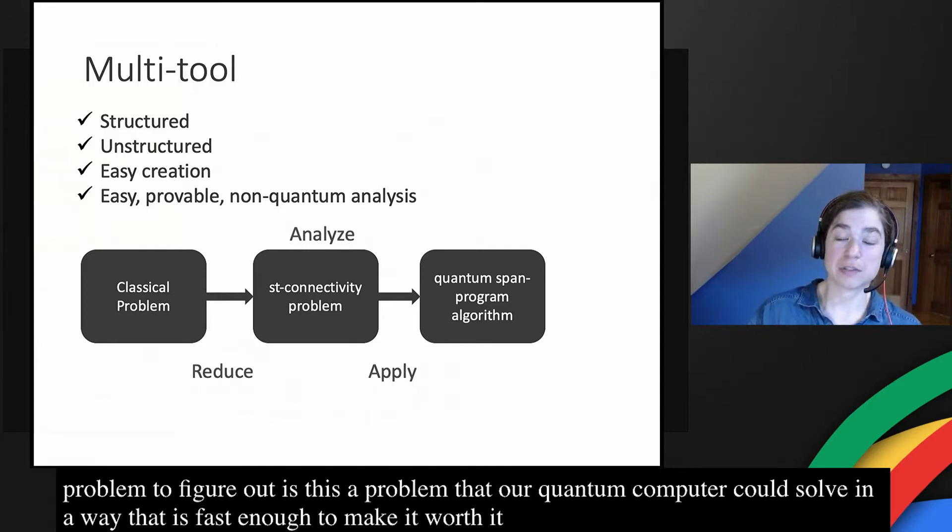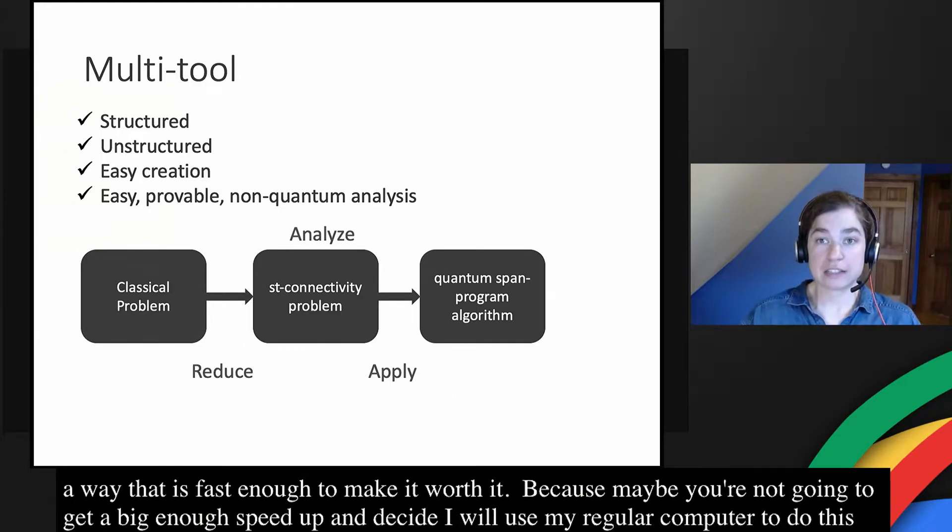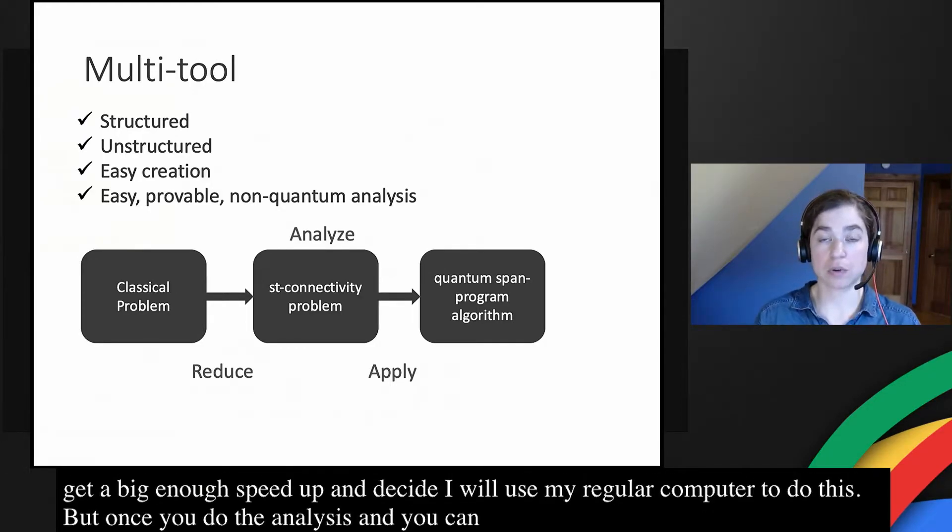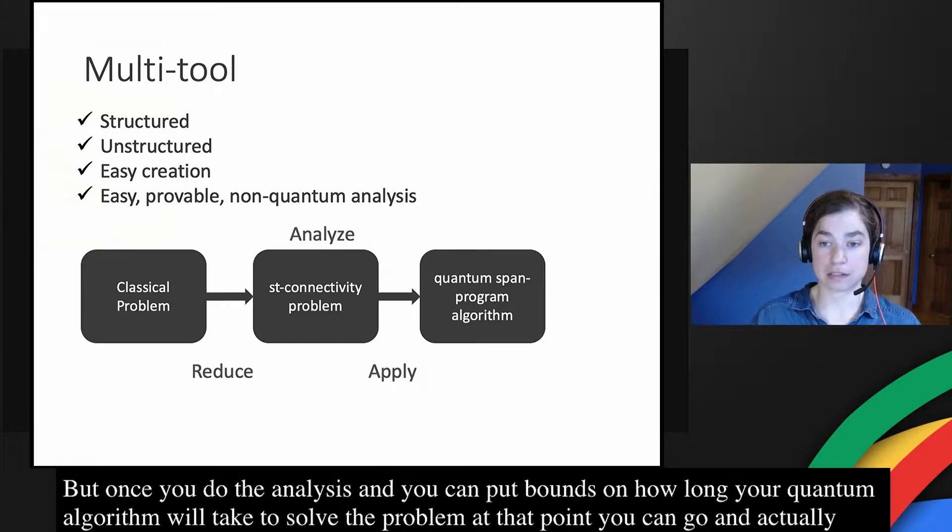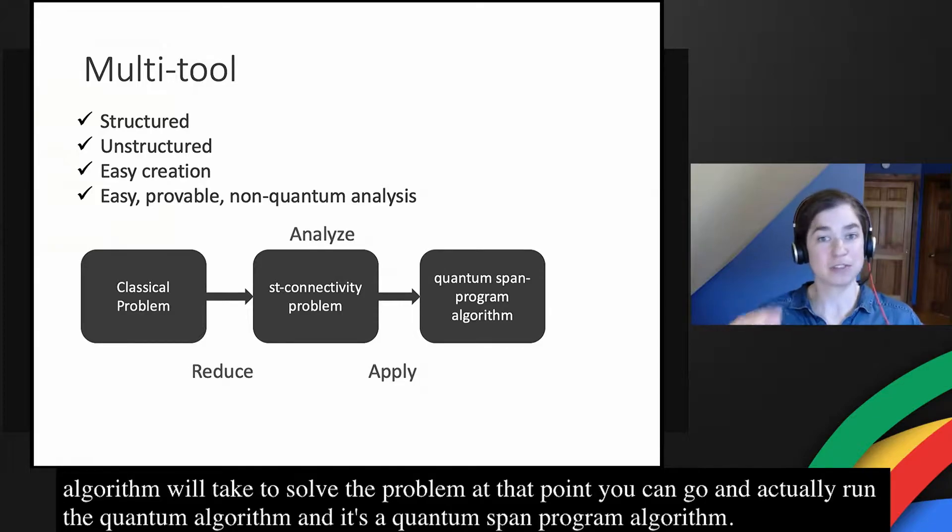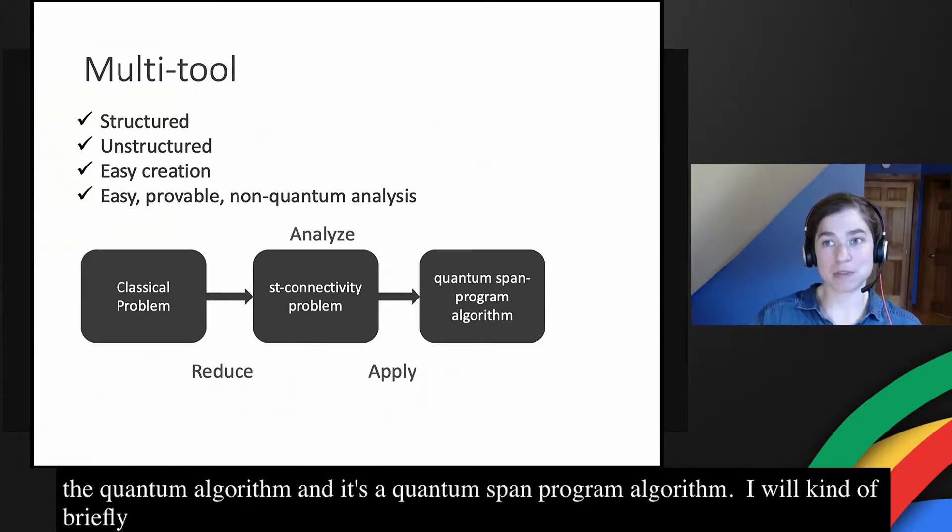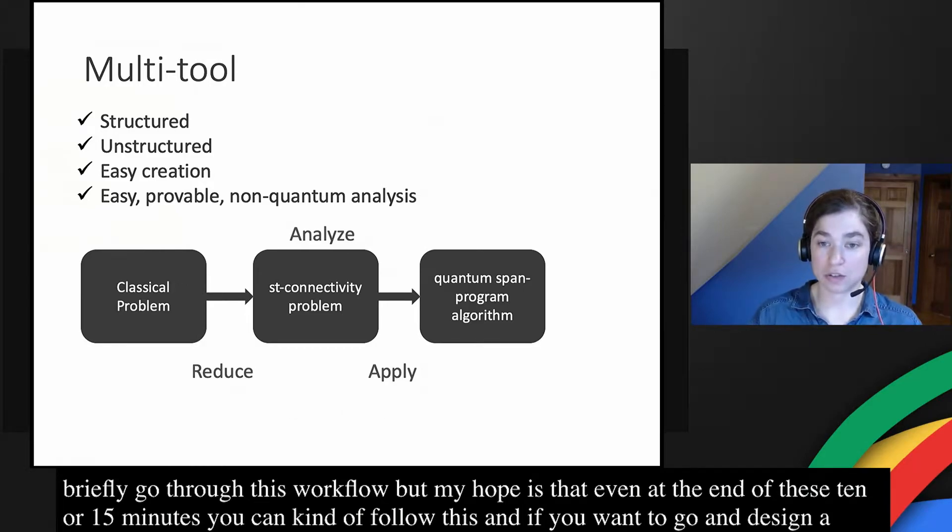Maybe you're not going to get a big enough speed up and you decide, I'll just use my regular computer to do this. But once you do the analysis and you can put bounds on how long your quantum algorithm will take to solve the problem, at that point you can go and actually run the quantum algorithm and it's a quantum span program algorithm. My hope is that even at the end of these 10 or 15 minutes you can kind of follow this, and if you wanted to go and design a quantum algorithm for a classical problem using this technique, you would be able to do that.